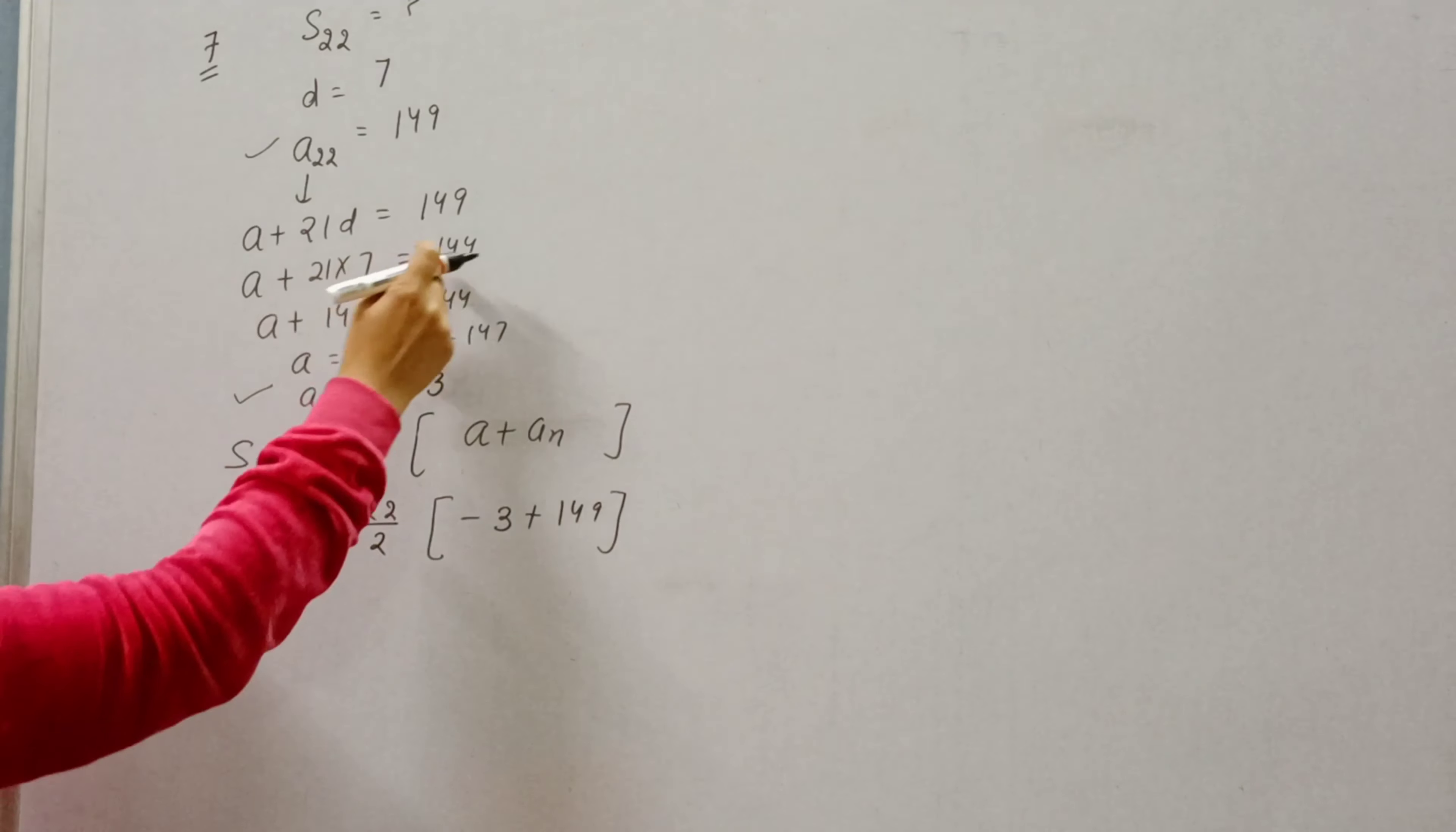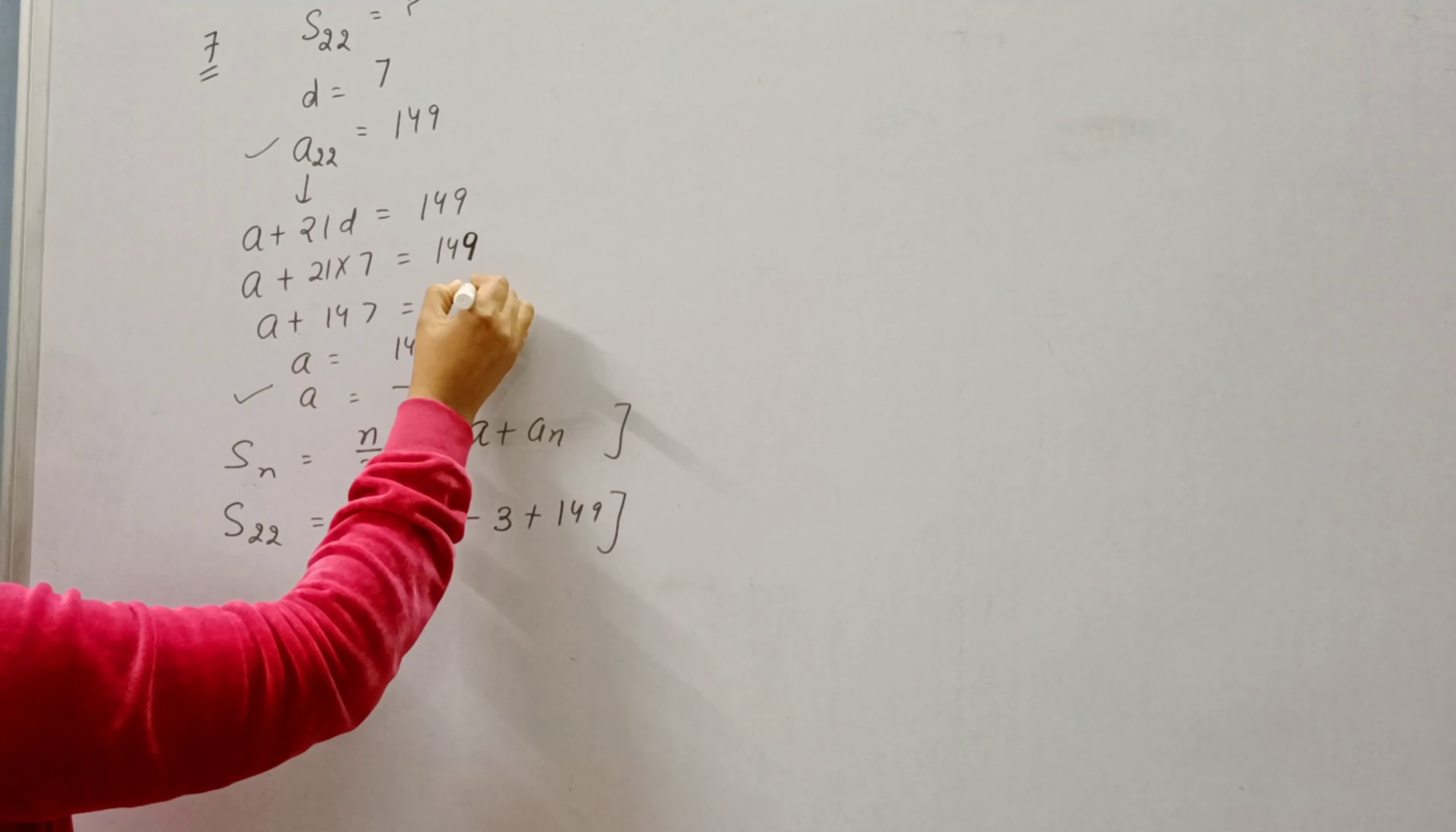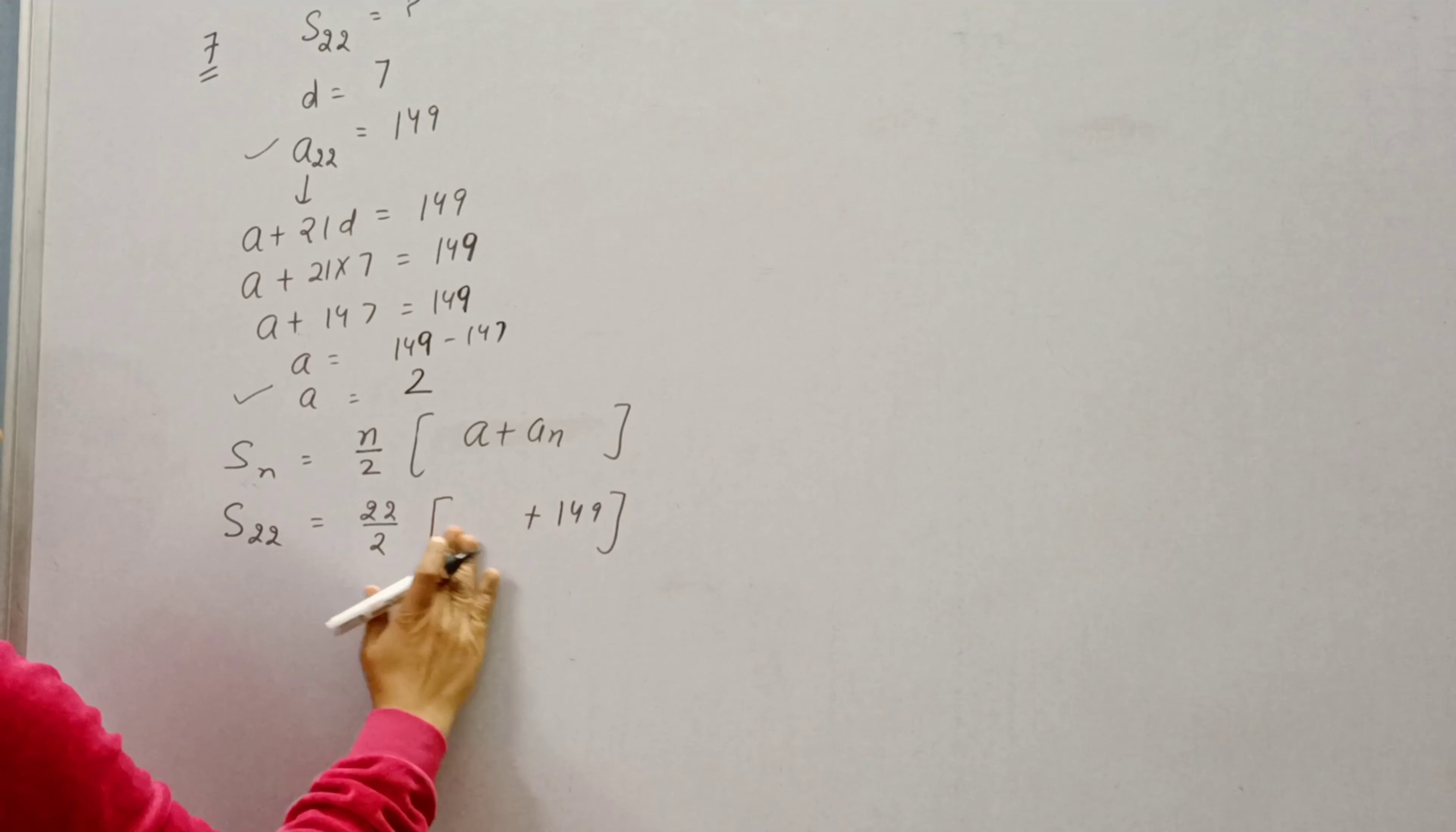One mistake is there. This is 149. So 149 minus 147 is equal to 2. So here we will apply A, value of A is 2. 2 times 11.